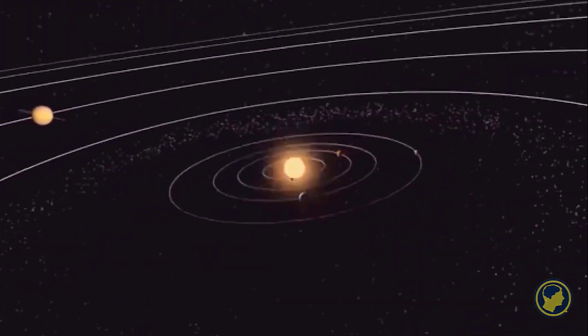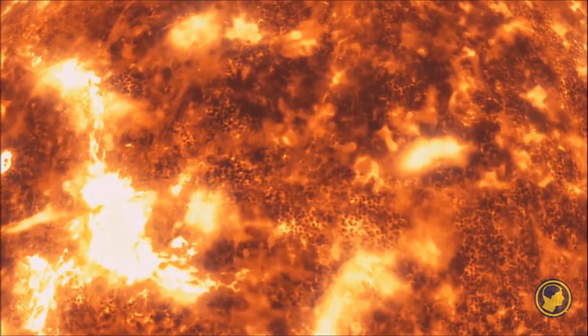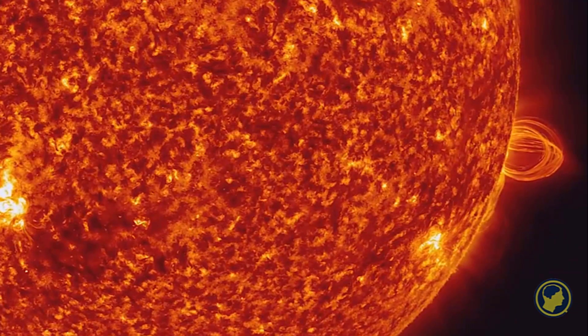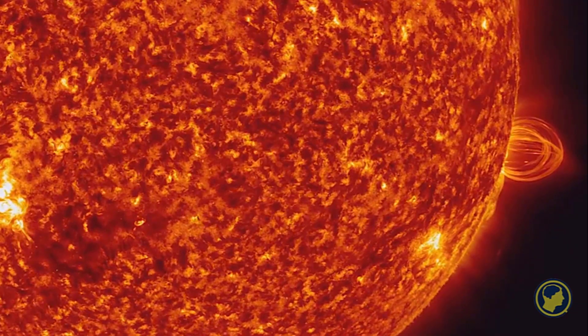In contrast, our sun, a yellow dwarf star about 4.5 billion years old, is expected to last another 6 billion years.